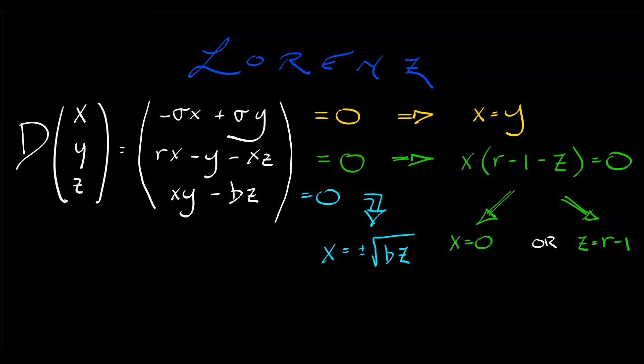Putting all this together gives us two possibilities. The first is that x equals zero, and so does y, and so does z. So, the origin is an equilibrium.